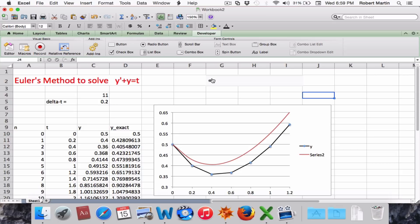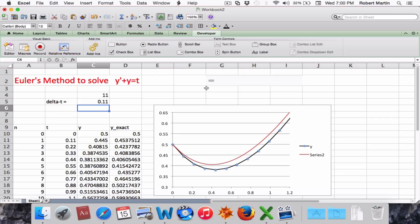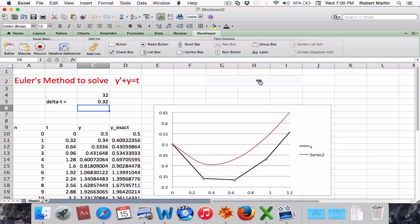Now I will select the cell where delta t is stored and insert a formula there. It's going to be the output from the scroll bar divided by 100. OK.